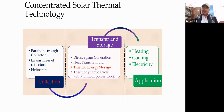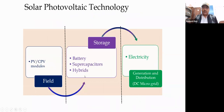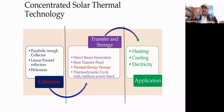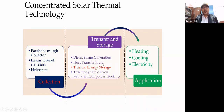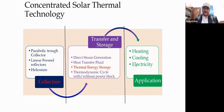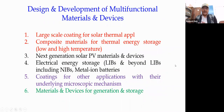Distributed solar thermal applications — small systems with storage — can provide heating and cooling in winter and summer for small areas. Unlike large PV fields, small solar thermal systems with storage can serve distributed heating applications. Both photovoltaic and solar thermal are two major ways we look at solar technologies.